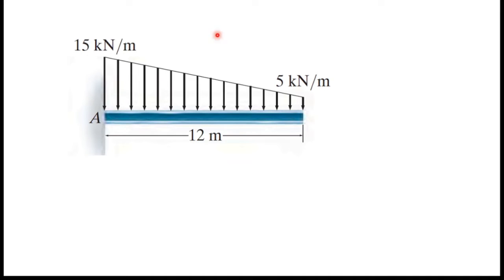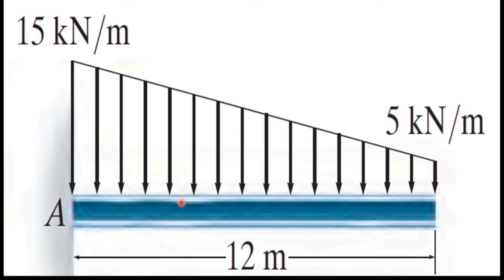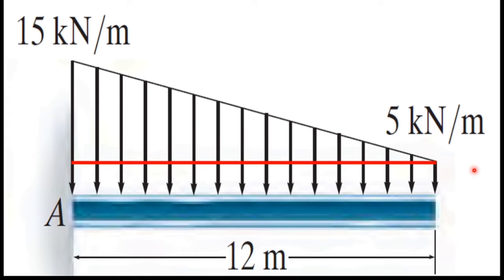Before I draw the free body diagram, I am going to analyze this distributed load. If we have a fixed support, we usually mark three components: two force components and one moment component. I will divide this distributed load into two parts by drawing a line through it — a top part and a bottom part.